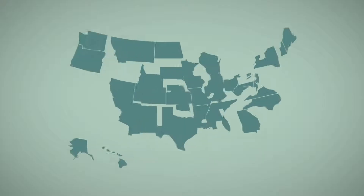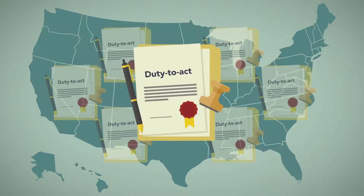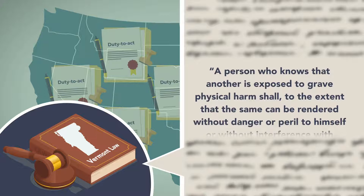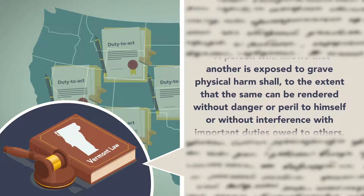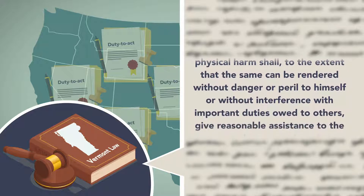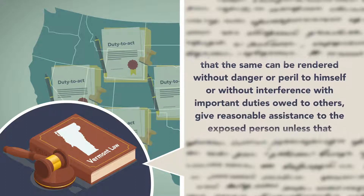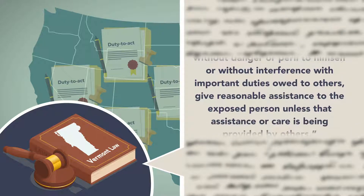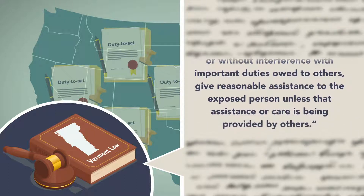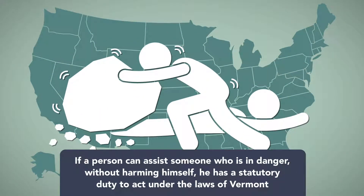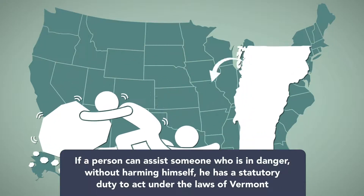Some states have duty-to-act statutes. Vermont passed one of the nation's first such laws, which states in part that a person who knows that another is exposed to grave physical harm shall, to the extent that the same can be rendered without danger or peril to himself or without interference with important duties owed to others, give reasonable assistance to the exposed person unless that assistance or care is being provided by others. In summary, if a person can assist someone who is in danger without harming himself, he has a statutory duty to act under the laws of Vermont.